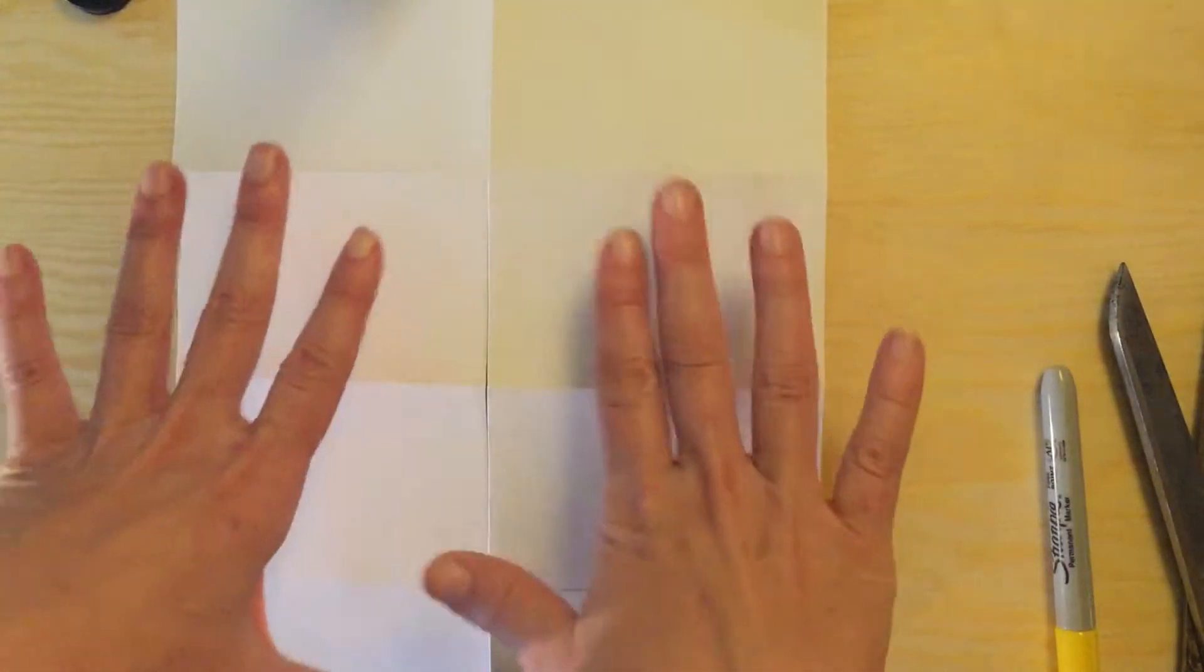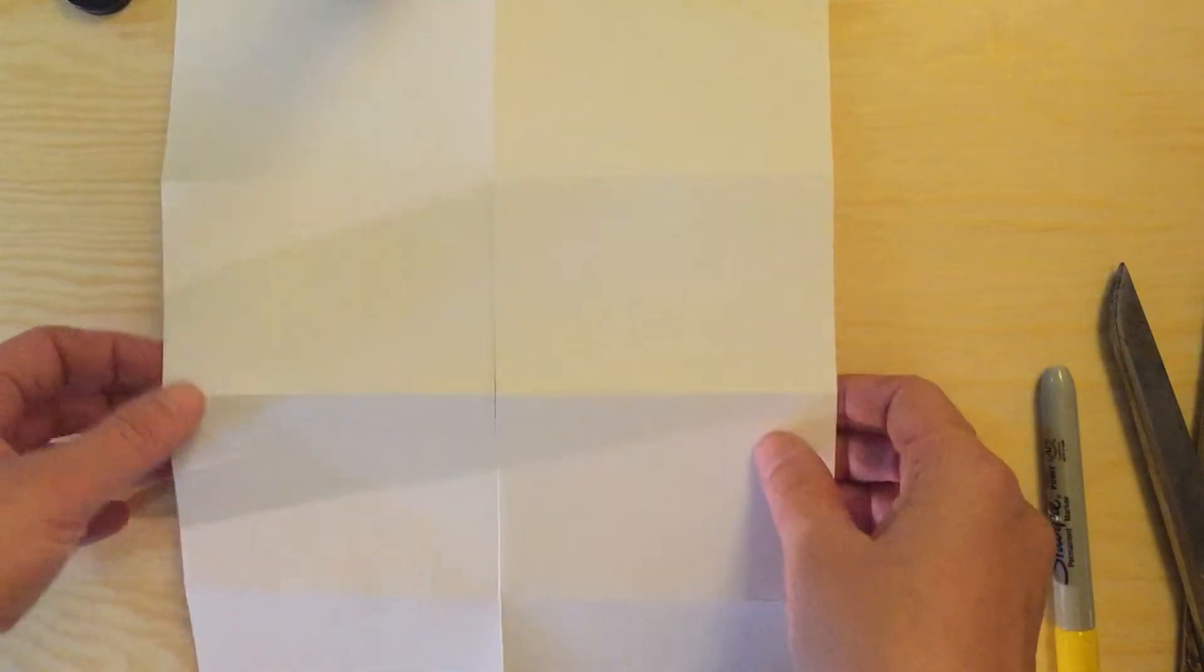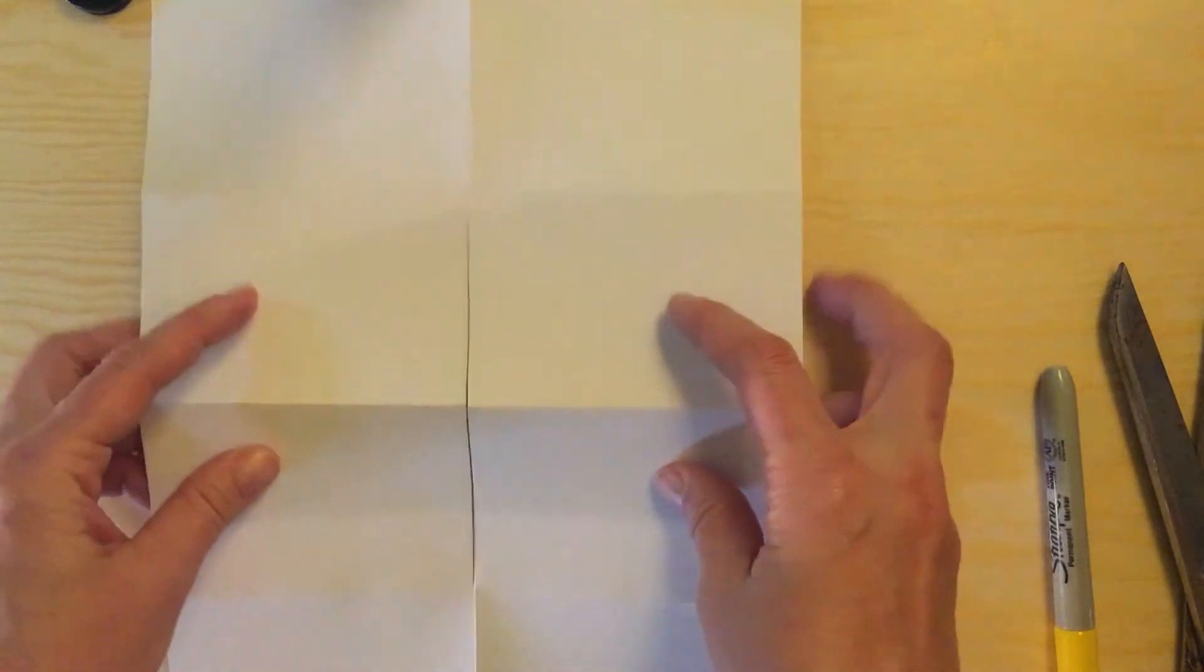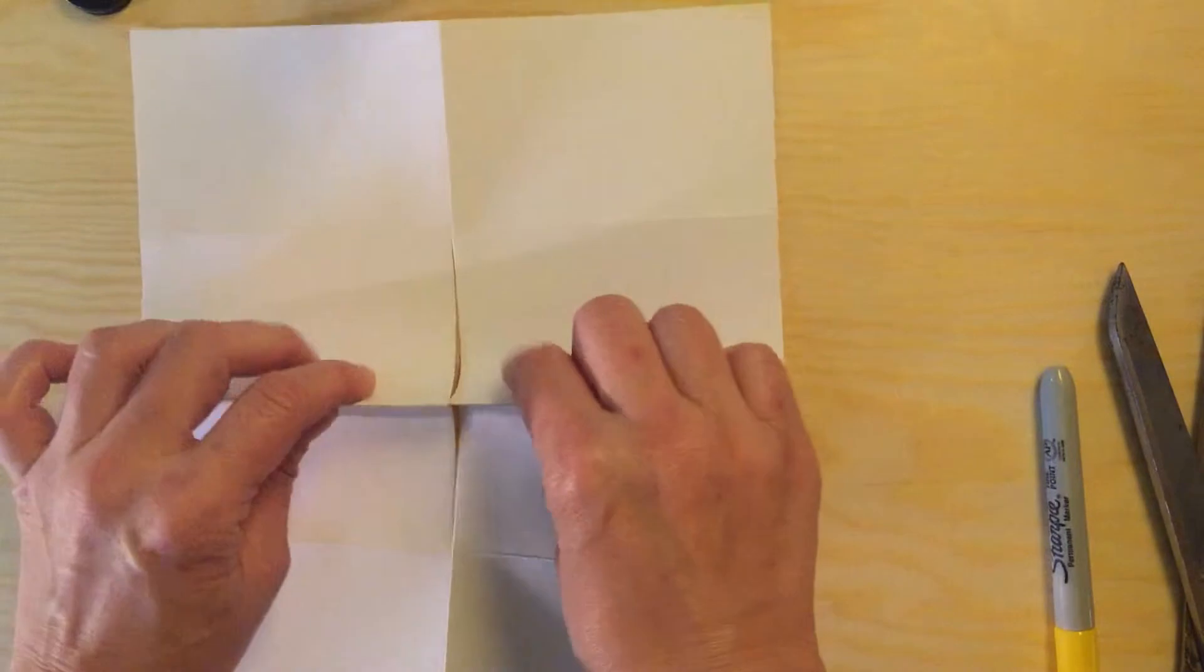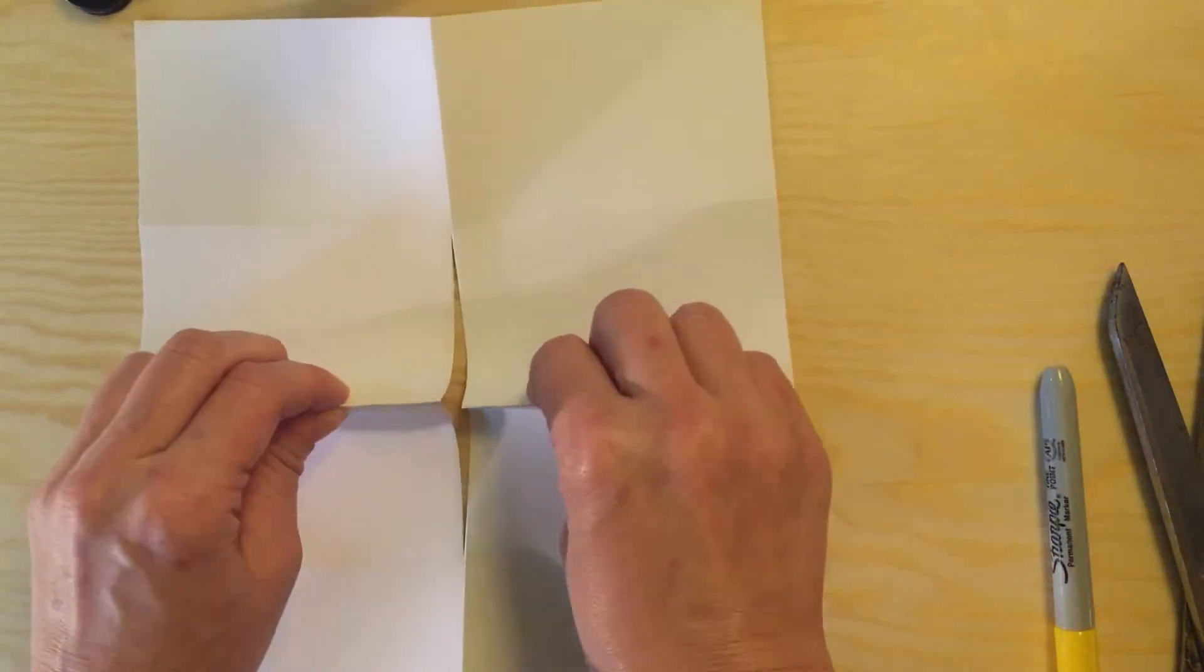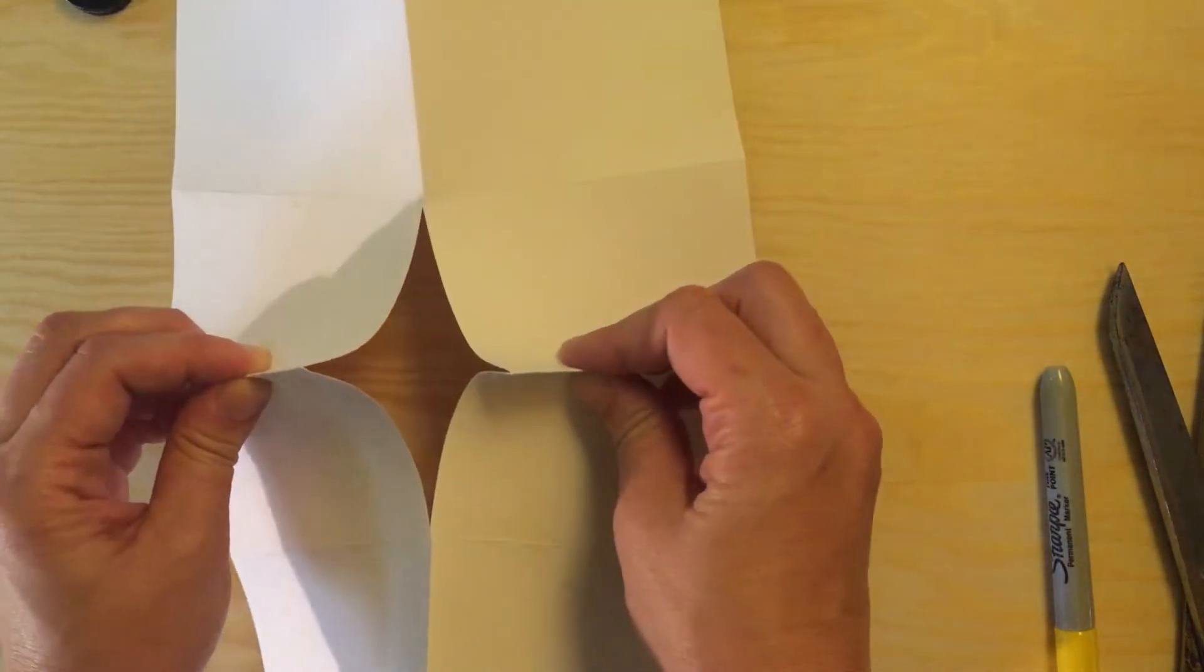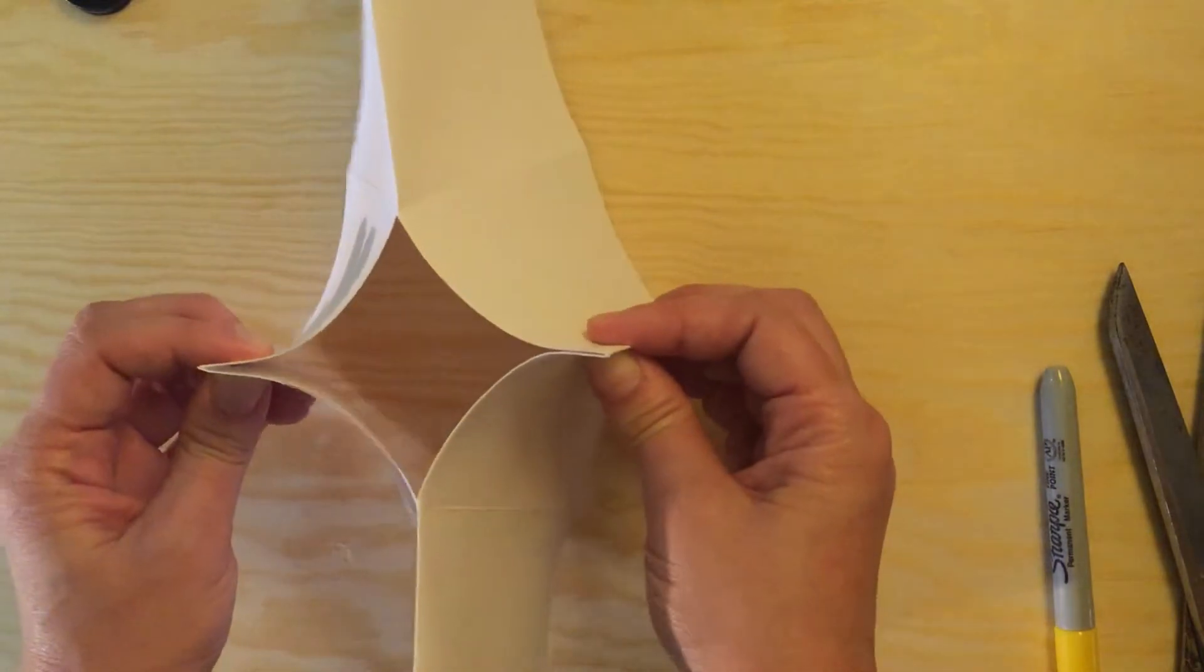After that you want to put the paper long ways in front of you with the mountain side up in the middle. You're going to take your pinching fingers and you're going to pinch the mountain fold and slowly bring your fingers out in order to make a diamond shape.